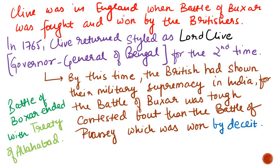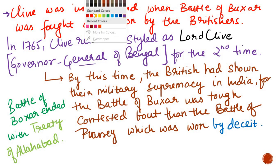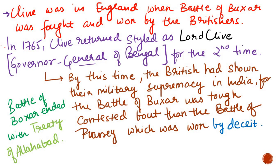Clive was in England when the Battle of Buxar was being fought. But when the Britishers succeeded and won the battle, he came back to Bengal as the Governor General of Bengal for the second time. By this time the British had shown their military supremacy in India — first they won the Battle of Buxar, and they had also won the Battle of Plassey. So after winning these two battles, they demonstrated their military supremacy in India. After the Battle of Buxar, the Treaty of Allahabad was signed.